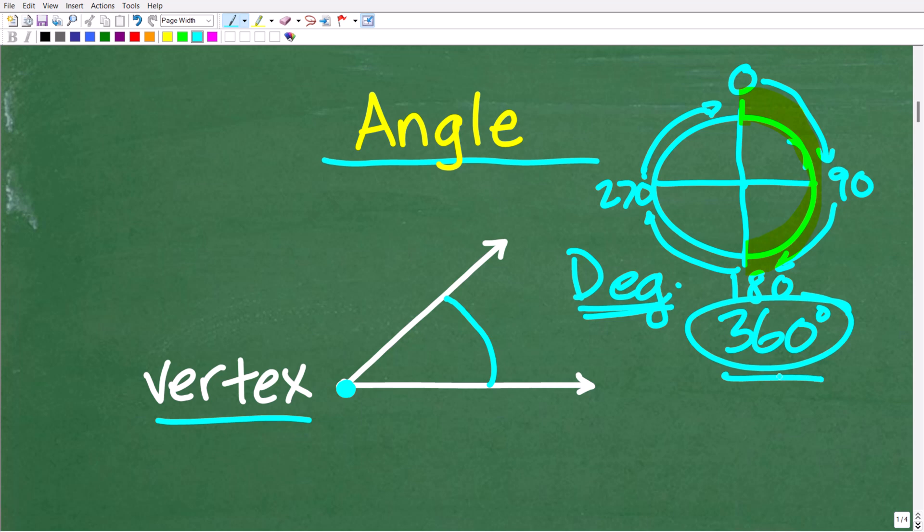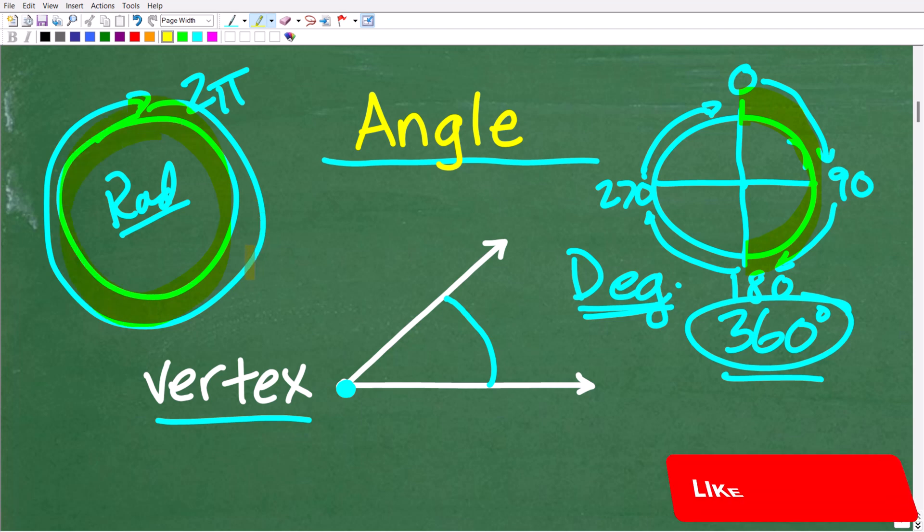Now just for some general knowledge for those of you that have not taken a lot of geometry, there are other ways to measure angles in a circle, and that is called a radian. So instead of 360 degrees in a circle, a circle can also be represented by two pi radians. And we typically use radians in more advanced math like trigonometry. But we're going to keep this nice and simple because we are working with degrees.